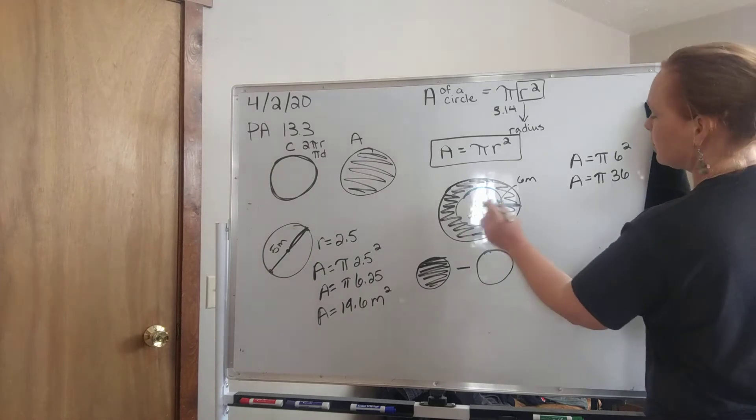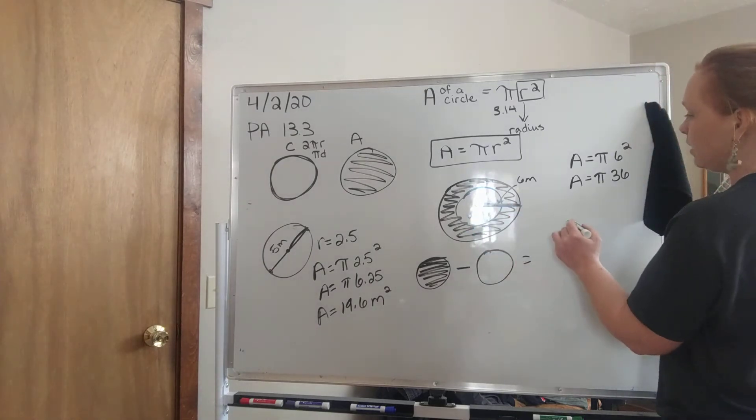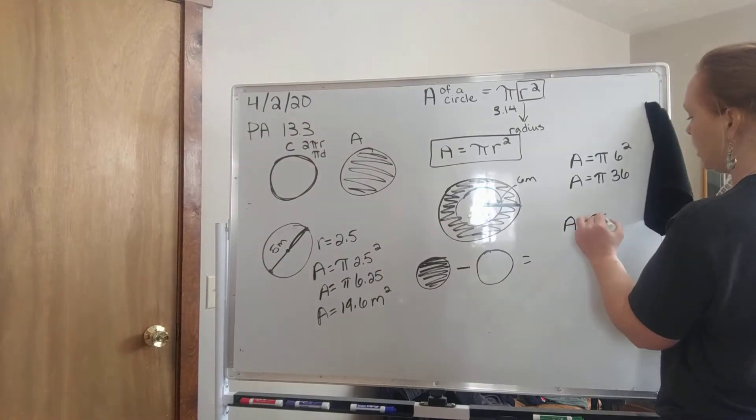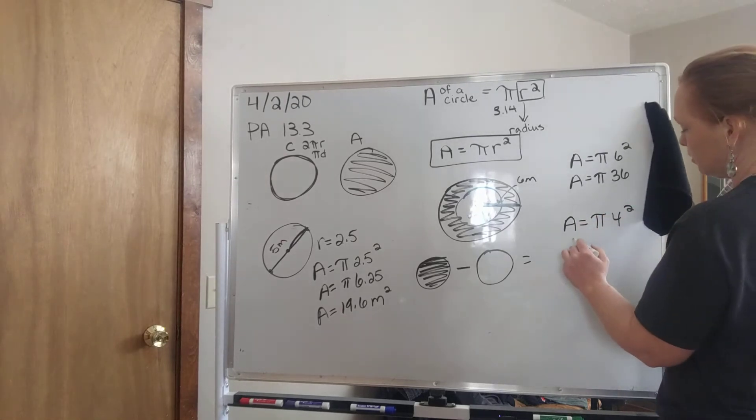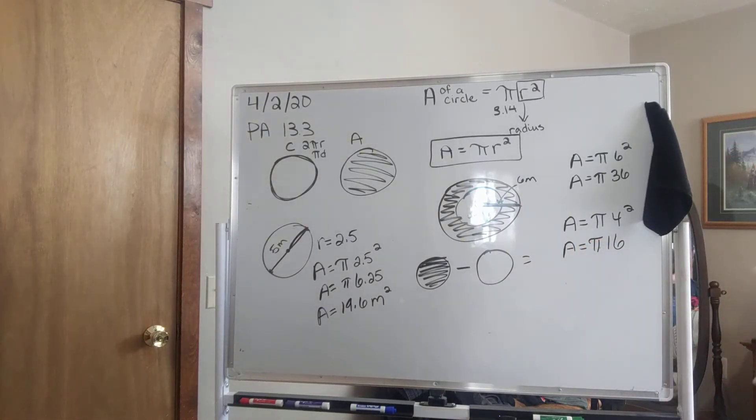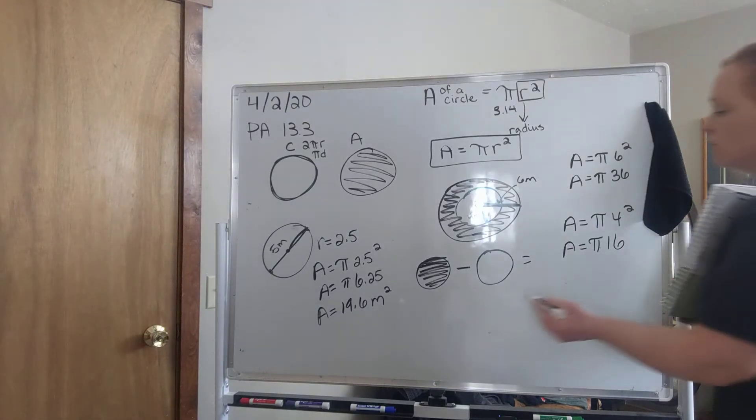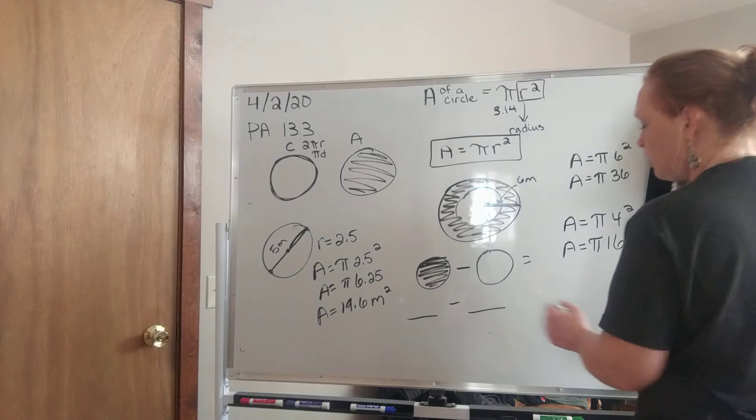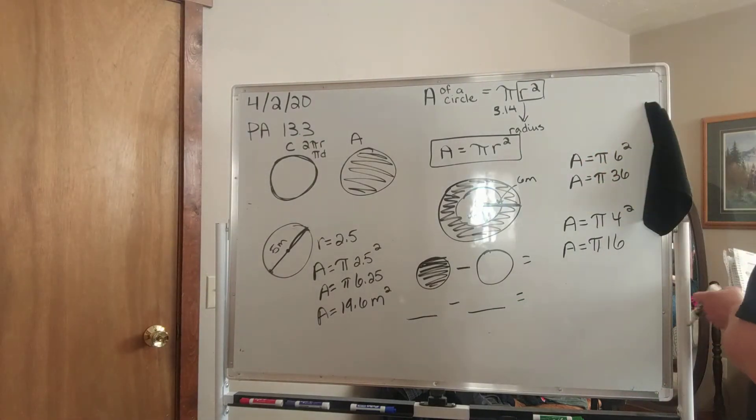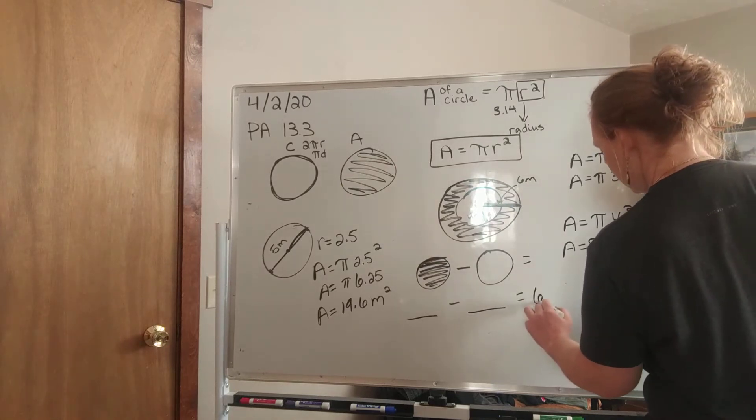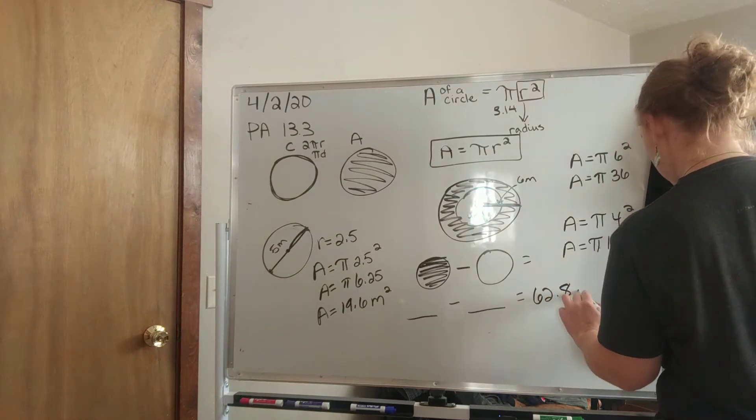And then let's look at our smaller circle, and let's do the area equals pi 4 squared. So the area equals pi times 16. Go ahead and find that figure. So go ahead and write your area of the shaded circle, subtract the area of the non-shaded circle. And when you do put that into your calculator, it becomes 62.8 meters squared.